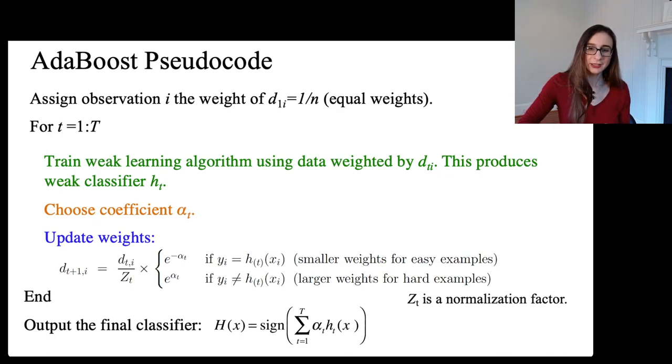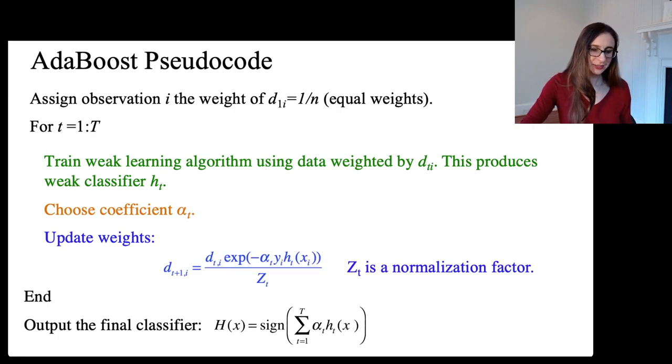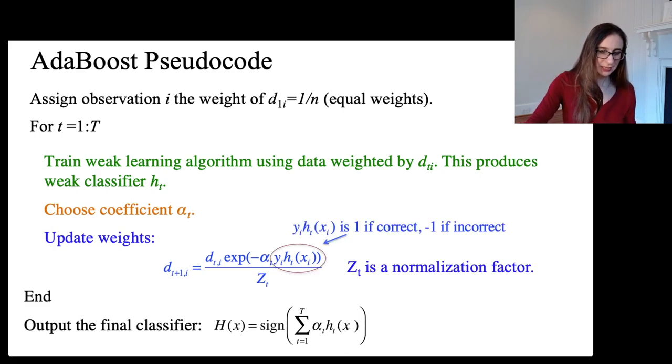And then, if the weak classifier got it right, you downweight it by a factor of e to the negative alpha. And if the weak classifier got it wrong, then you upweight it by e to the alpha. So that's what it was doing. And then, after it changed all of those weights, then it normalized everything by dividing by Z_t, which is just the sum of the weights, just to make sure everything adds up to one. So, again, here's the technical version of that. And just so that you see it here.